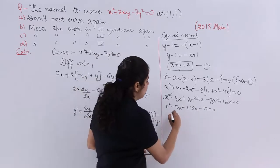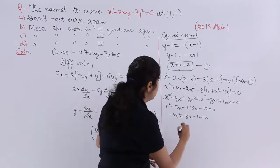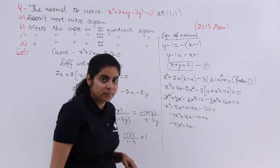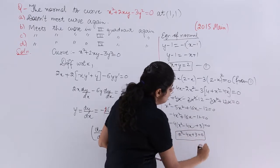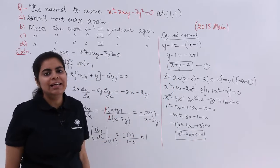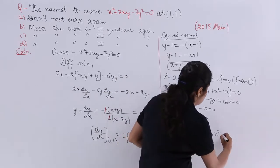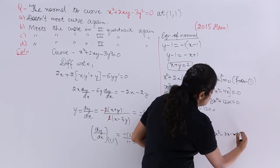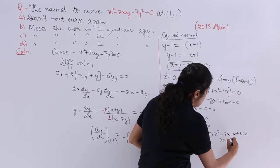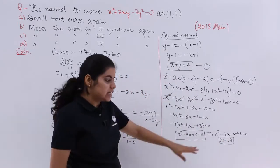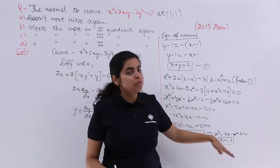Dividing by −4: x² − 4x + 3 = 0. Splitting the middle term: x² − 3x − x + 3 = 0, so x(x − 3) − 1(x − 3) = 0, giving (x − 1)(x − 3) = 0. Therefore x = 1 and x = 3. These satisfy sum = 4 and product = 3, confirming the roots.